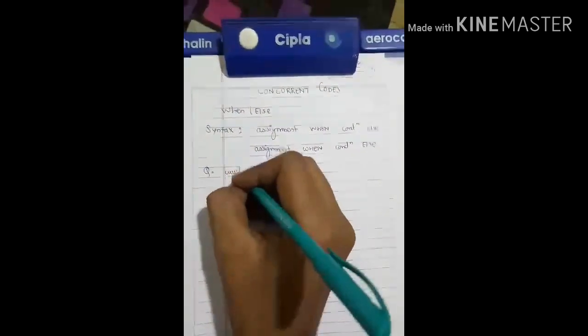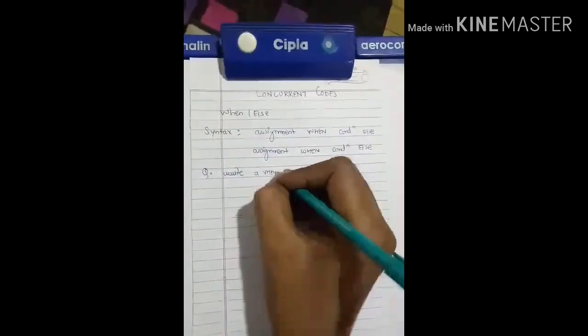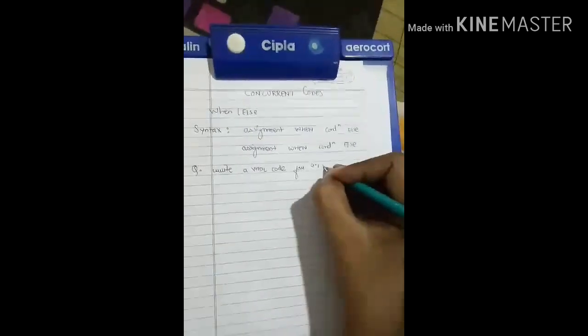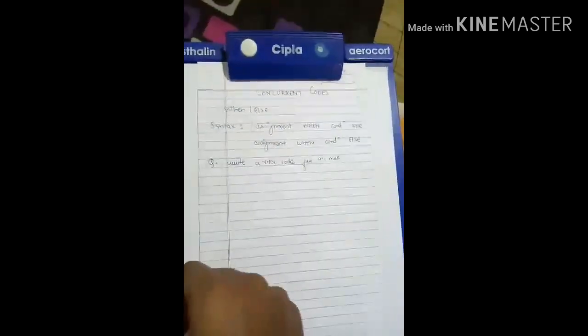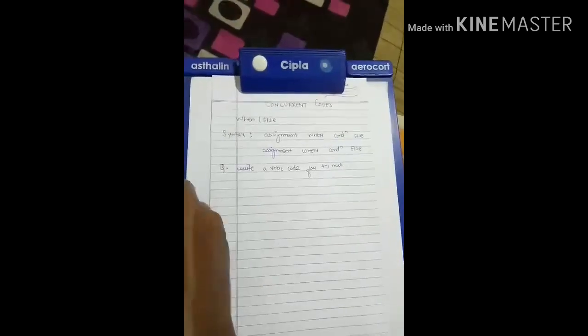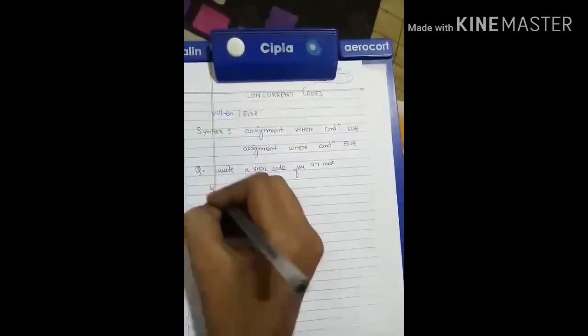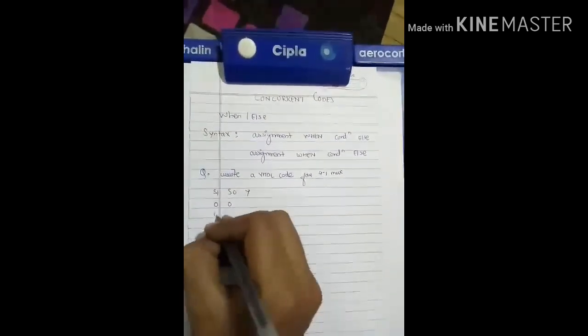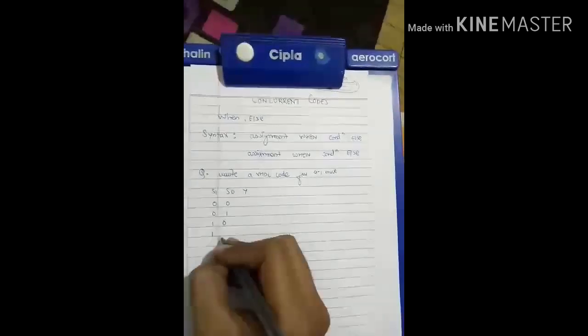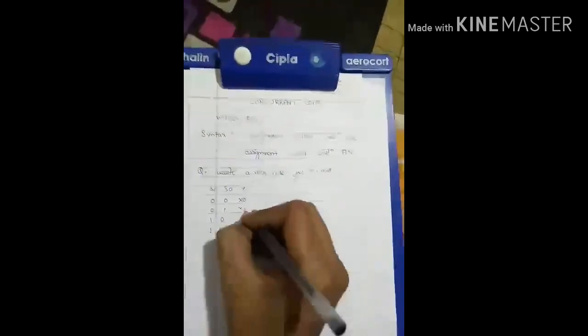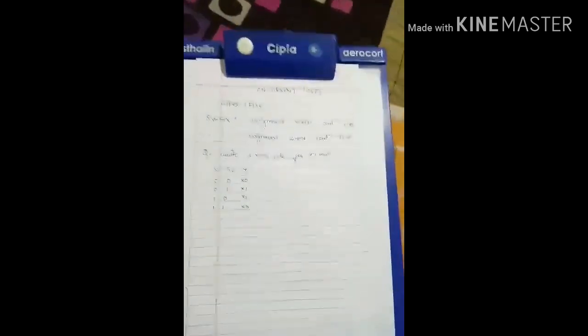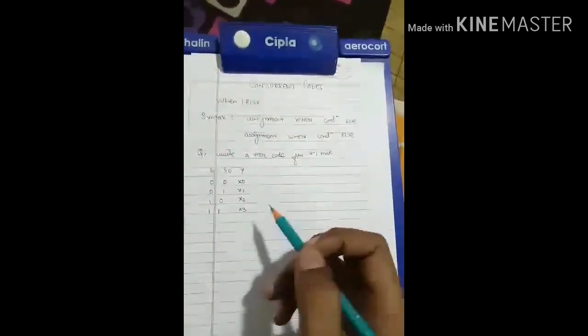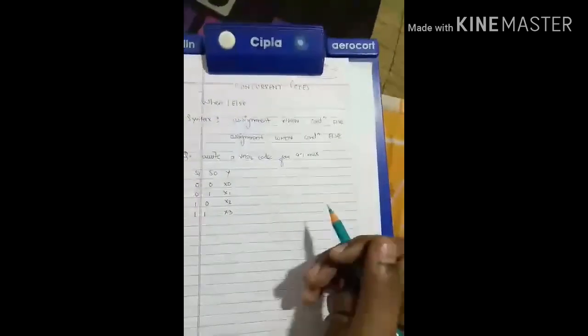The question is: write a VHDL code for 4-to-1 MUX. Here we will write a truth table according to the 4-to-1 MUX which consists of S1 and S0 and output named as Y. The inputs are 00, 01, 10, 11, and the outputs are X0, X1, X2, and X3. According to this truth table we need to write a VHDL code for 4-to-1 MUX.